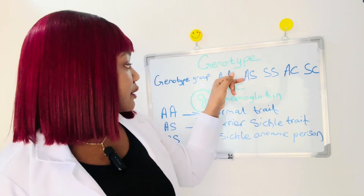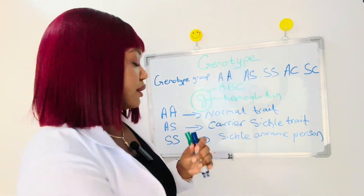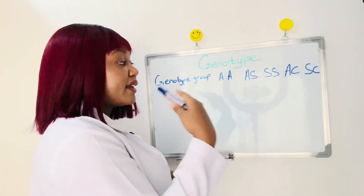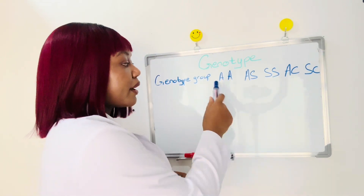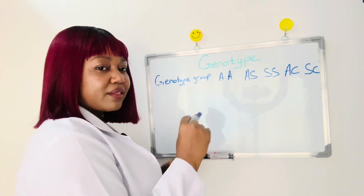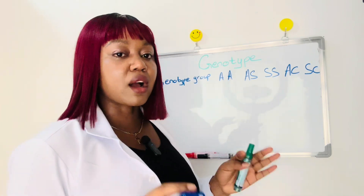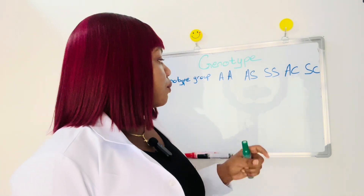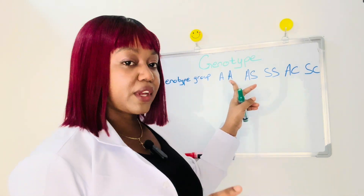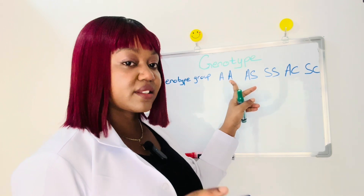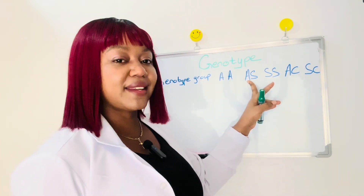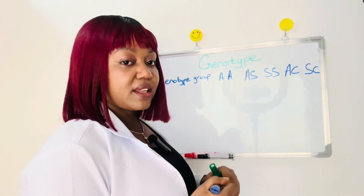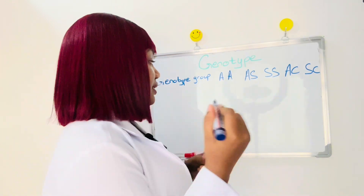If you are a normal individual having the AA trait and you get married to another individual also having AA, definitely all their offspring are going to be healthy individuals with no sickle cell trait. But if someone with AA — a normal individual — gets married to someone with AS who carries the sickle cell trait, let's see how their offspring are going to look.